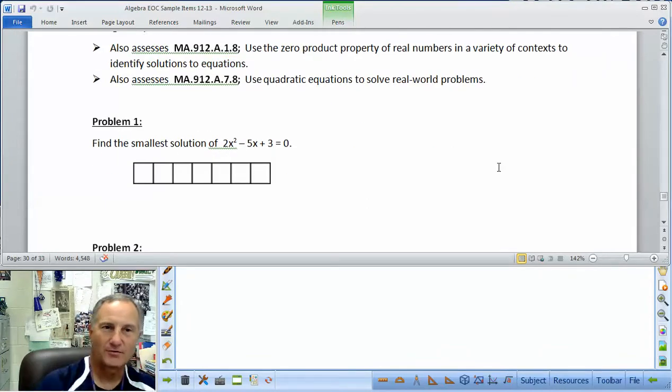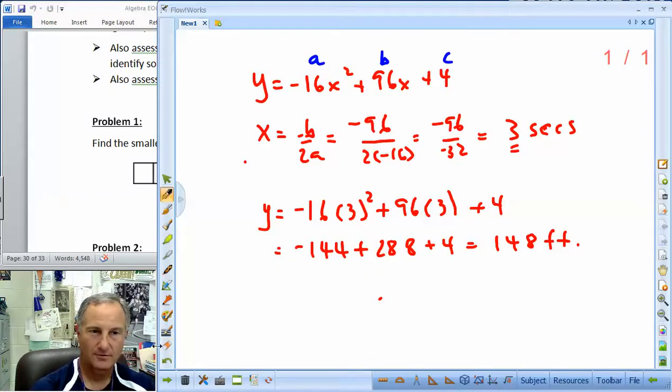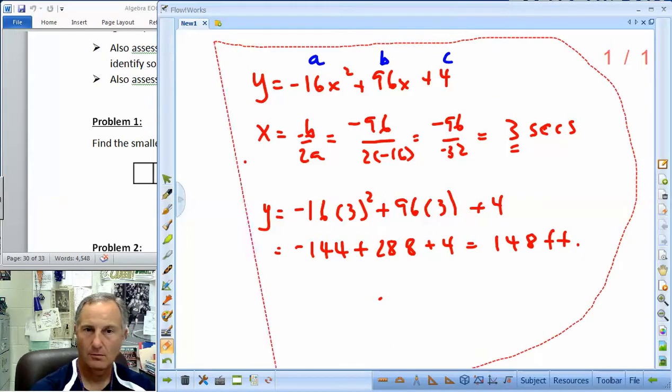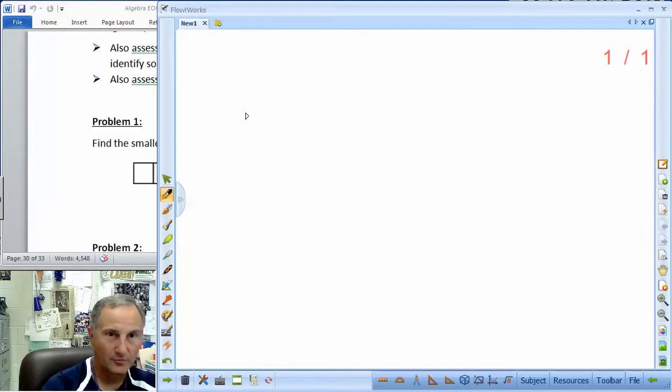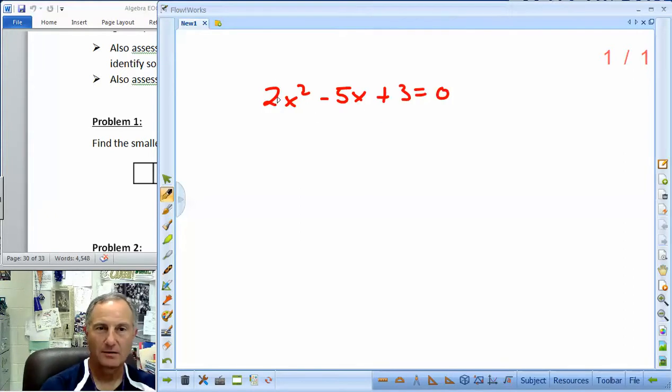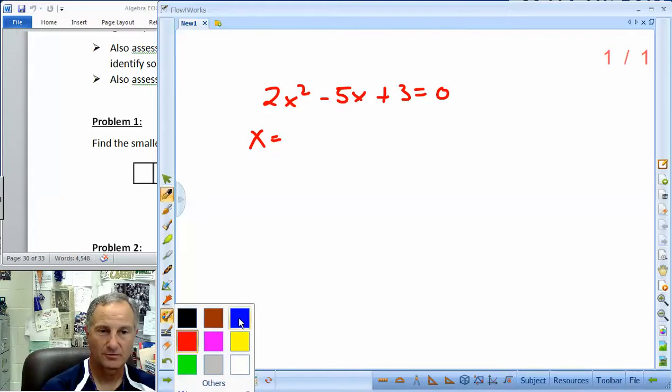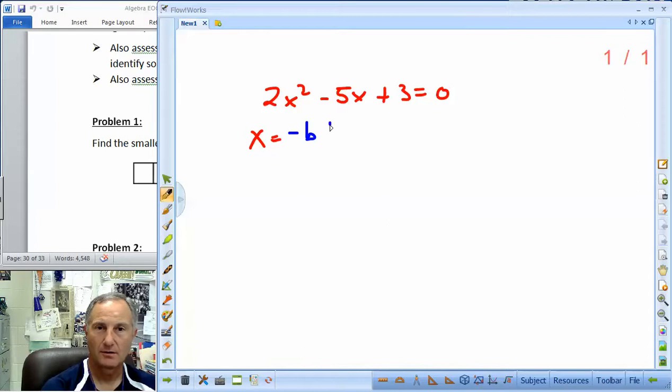Alright, find the smallest solution of 2x squared minus 5x plus 3 equals zero. Let's go over here. So we're starting off with 2x squared minus 5x plus 3 equals zero. Now, to factor this, because our a isn't 1, it's 2, we have to do fabulous factoring.